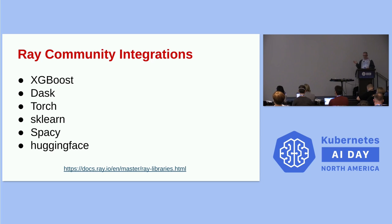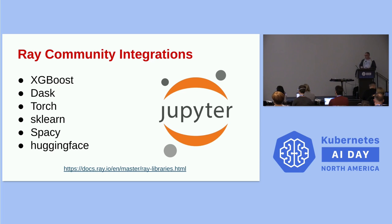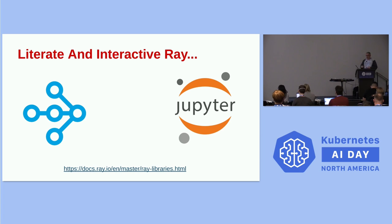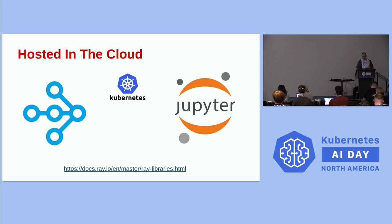There are tons and tons of community integrations — all the popular machine learning libraries and many more already have integrations available. The link shown gives the complete community list, which is dozens at this point. Since all these things are in Python, as data scientists we're already working with most of these tools via Jupyter at least part of the time. Taking Ray and Jupyter together, there's the promise of literate and interactive Ray programming. Furthermore, both Jupyter and Ray can operate in the cloud — and today that means Kubernetes. My demo will actually be running on OpenShift.